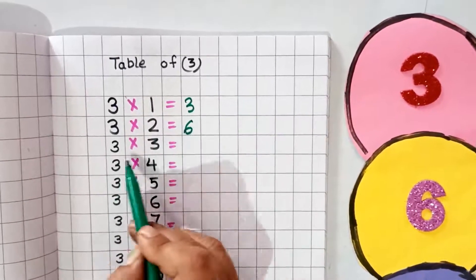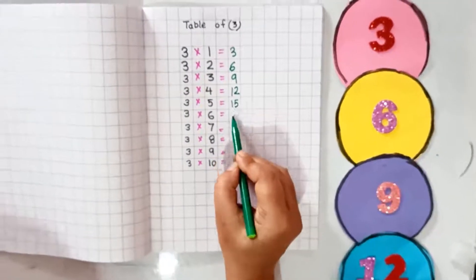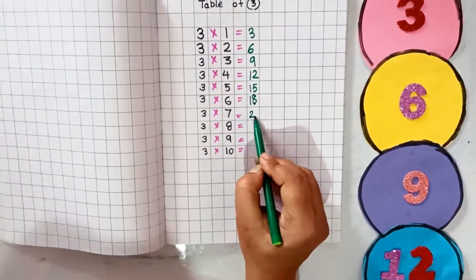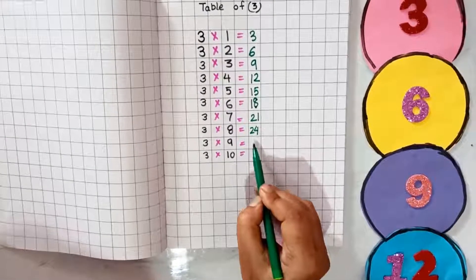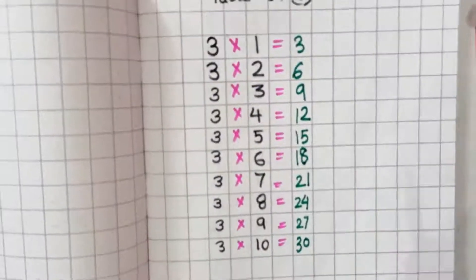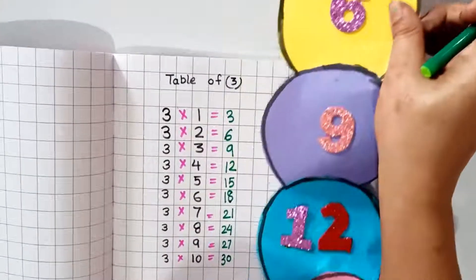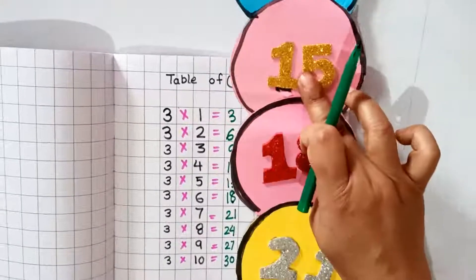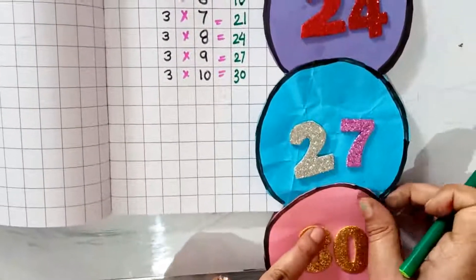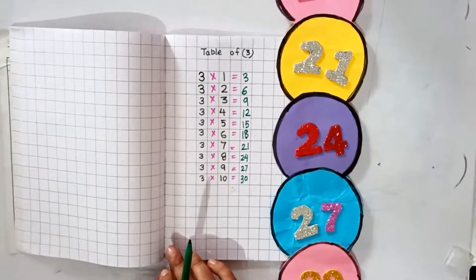3 times 2 is 6. 3 times 3 is 9. 3 times 4 is 12. 3 times 5 is 15. 3 times 6 is 18. 3 times 7 is 21. 3 times 8 is 24. 3 times 9 is 27. 3 times 10 is 30. See, same numbers: 3, 6, 9, 12, 15, 18, 21, 24, 27, 30. So all of you can learn the table of 3 with skip counting by 3.